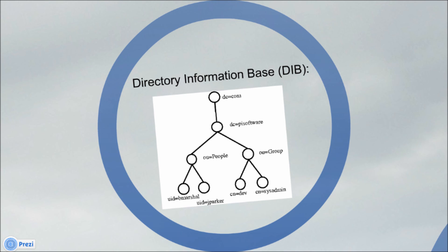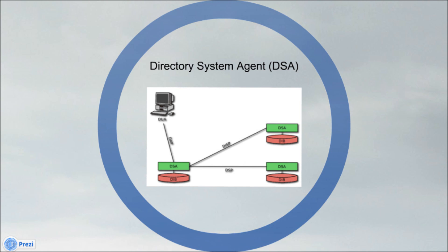The directory information tree is the naming hierarchy that describes the hierarchical structure of the DIB. The directory system agent is a particular server that maintains a subset of the DIB and provides an access point to the directory for DUAs to connect. Each DSA is responsible for a subset of the DIB and includes a set of naming contexts that define objects that are near each other in the DIT. DSAs also communicate with each other for directory replication purposes to ensure that each DSA's subset of the DIB is current and complete and to maintain the integrity of the whole X.500 directory service.